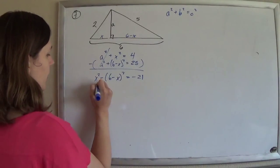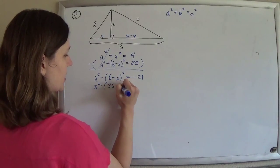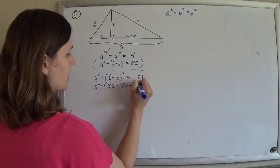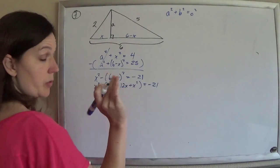So we keep going. If you were to FOIL this guy out, 6 minus x times 6 minus x, you'd get 36 minus 12x plus x squared equals negative 21. The x squared minus the x squared goes away.